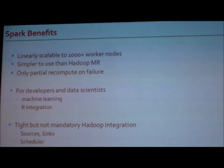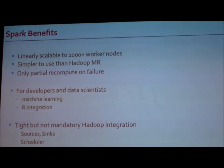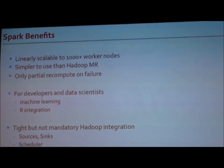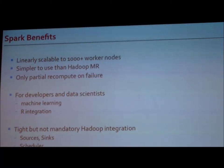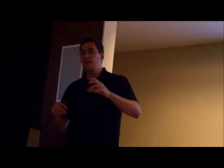Spark claims it's linearly scalable to thousands of nodes. It's also simpler to use than Hadoop MapReduce — if you've used Hadoop MapReduce code and compare it to Scala code in Spark, it's much, much easier. Another important benefit: only partially recomputed on failure. In Spark all computations are done in memory, which is why it's so fast. But if you do in-memory computations and one of your workers dies, you need to recompute that part. What Spark does is take your RDD, and every time you transform it, it creates a reference back to the original one, building a hierarchy tree of your RDD computations. If a node fails, Spark knows exactly from the hierarchy which parts to recompute.